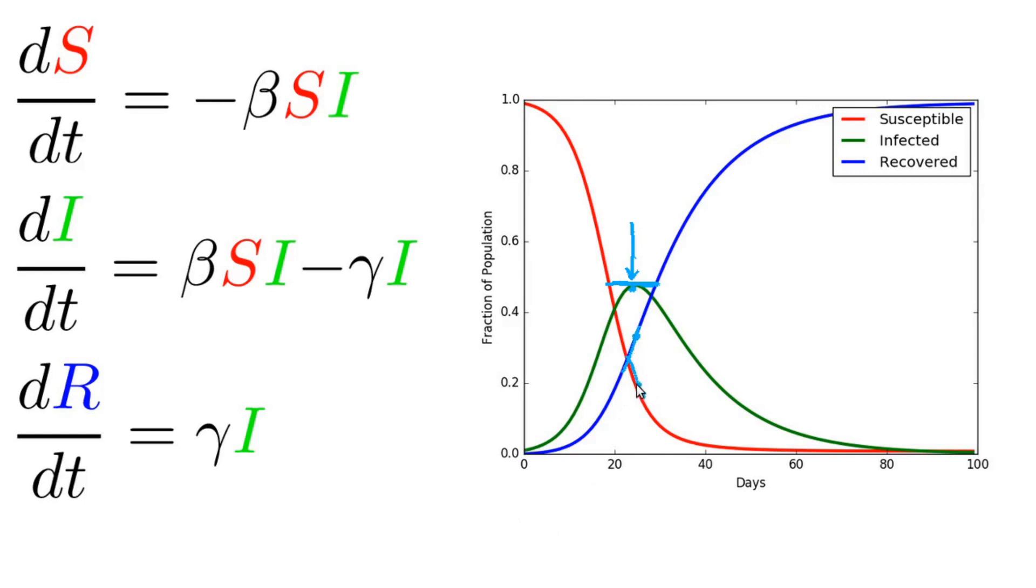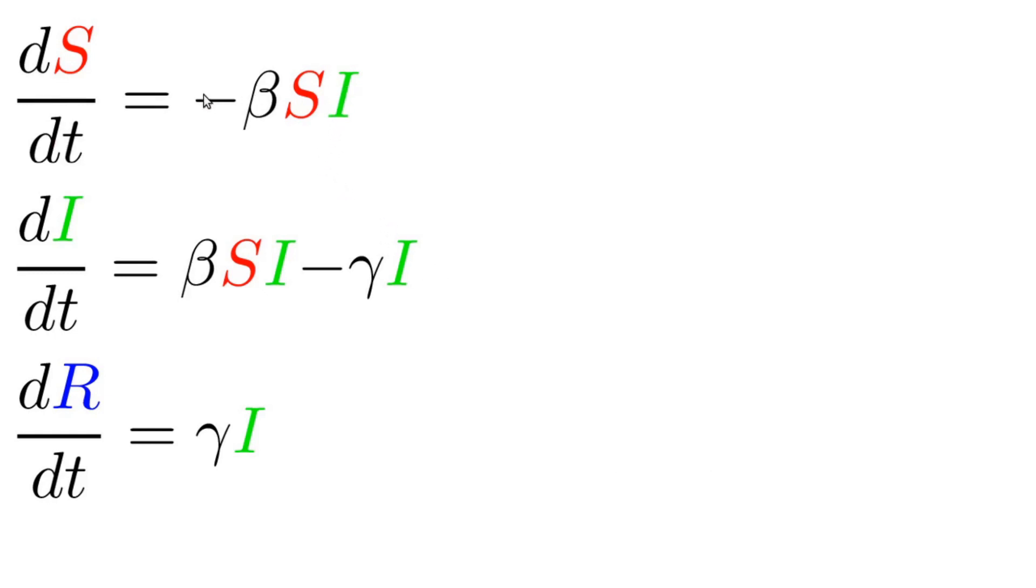So notice that that's slightly after the point in this instance where the blue curve is equal to the red curve. It's where the blue curve's slope is equal to negative the red curve's slope. Now, how can we go about solving these equations?